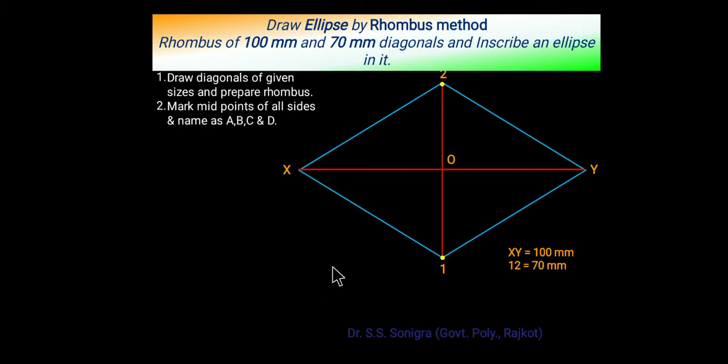Then draw rhombus by joining X-2, Y-1, and X-1. Mark midpoints of all sides. Say midpoint of X-2, Y-2, 1-Y, and X-1 name is A, B, C, and D. These are the midpoints of all four sides of given rhombus.